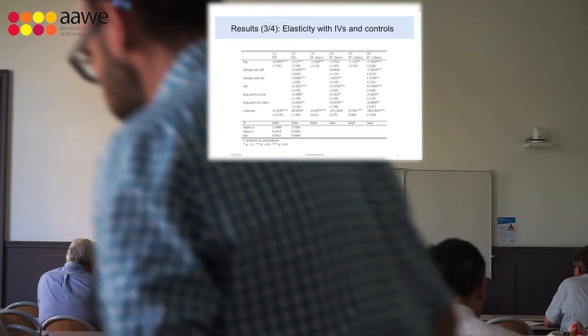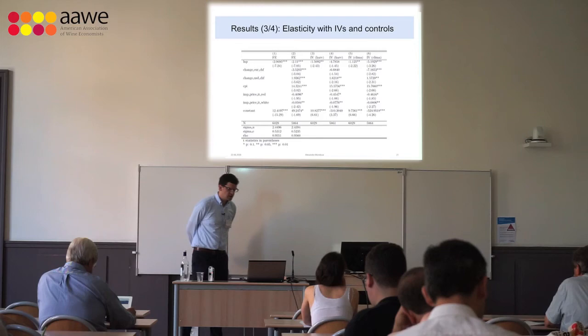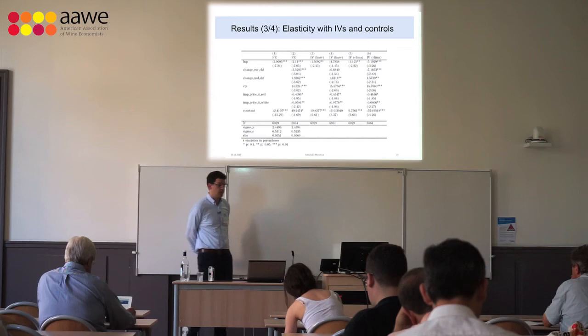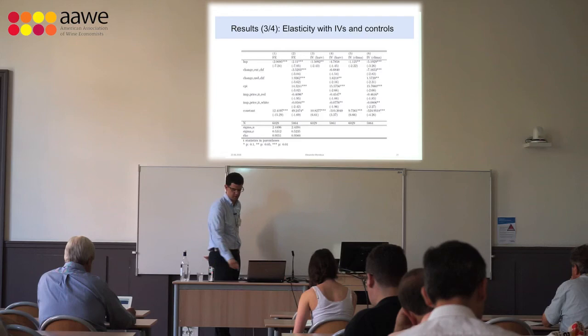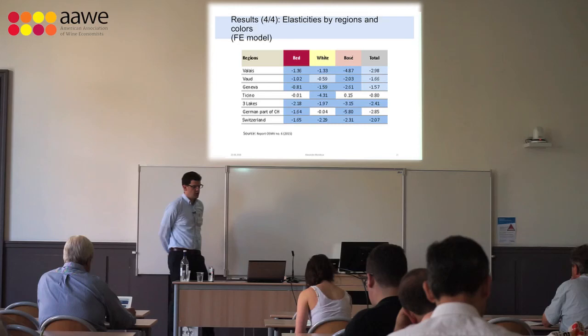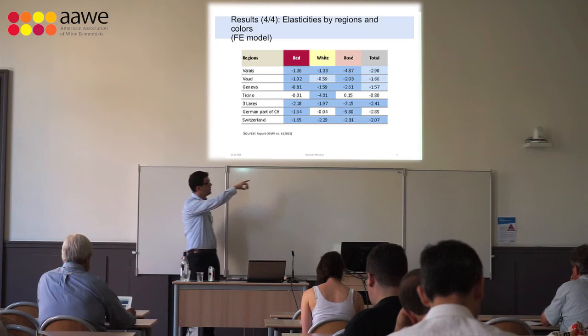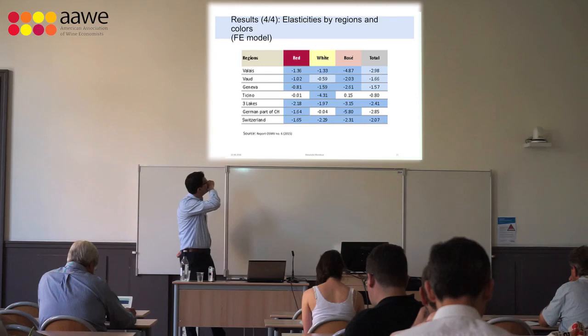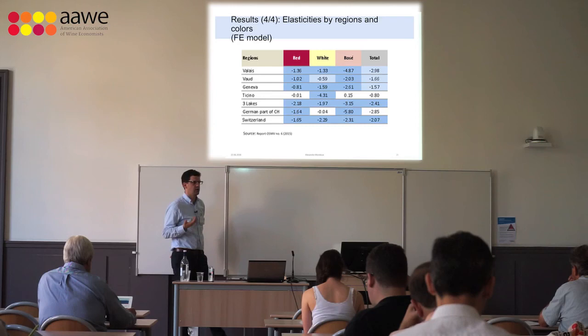When we add all the control variables, the fixed effect results are fine. However, for the IV strategy, we still have some issues with multicollinearity and correlation between controls that we have yet to resolve — for example, in specification number 6 we obtain minus 5 for price elasticity. The results disaggregated by color and region again show minus 2 for Switzerland overall. One interesting result is rosé wine for Valais, the main producer of rosé in Switzerland, where consumer reaction to a price change appears to be higher.